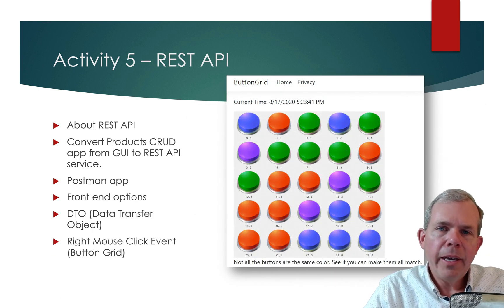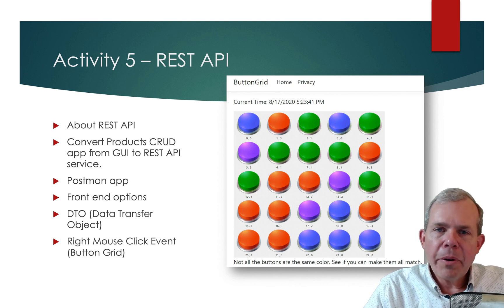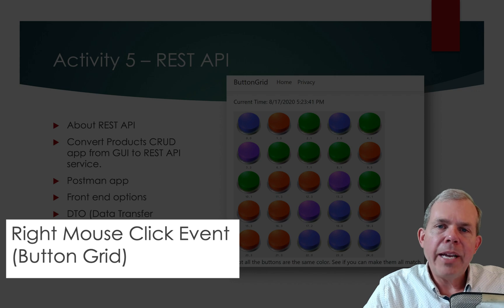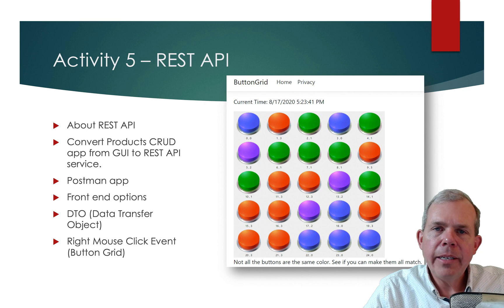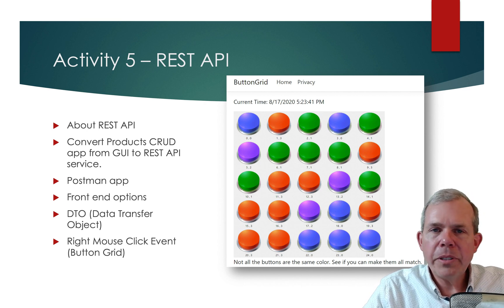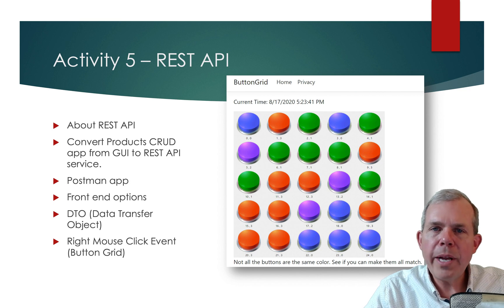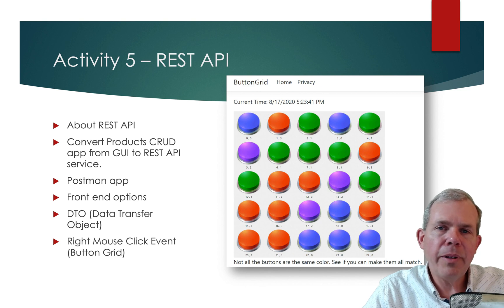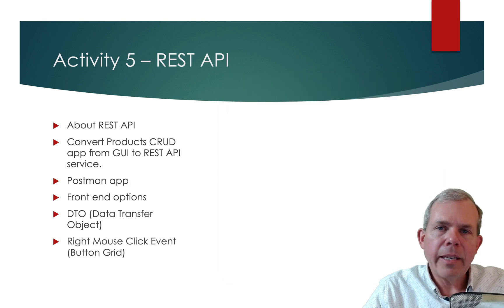Unrelated to REST is another version of our button-click game. We're going to add the ability to handle a right-click. In JavaScript, you can handle a right-click, a left-click, and even a center-click if you have that on your mouse. We'll show you how to do a right-click, which will change the status of one of the buttons. In Minesweeper, you use the right-click to plant a flag on a button. This will extend the button grid program in this activity.